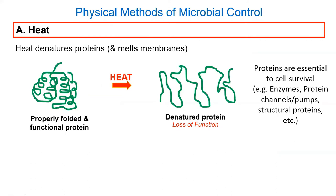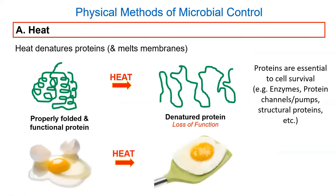Heat primarily denatures proteins and also denatures membranes. You can think of denaturing as kind of like melting. A protein on the left is folded, compact, and in a biologically functional form. When you add heat, it denatures - it melts and unravels. That's kind of like what you do when you cook an egg. All the proteins in the egg white are soluble and floating around, and when you cook it, they denature, congeal, and turn into something more gelatinous than in the original egg.